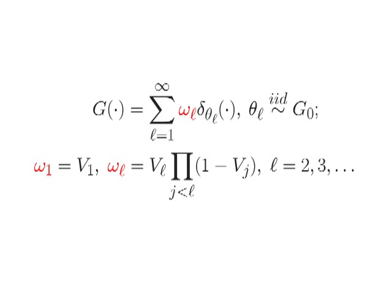At each iteration, the proportion to break off the remaining stick is sampled from a beta distribution. Confused? Let me demonstrate.